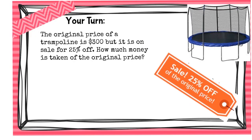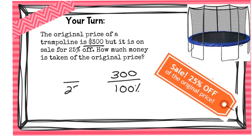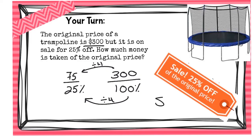Now it's your turn. The original price of a trampoline is $300, but it is on sale for 25 percent off. How much money is taken off the original price? Let's go over this: $300 represents 100 percent, and I need to find the 25 percent, which means dividing by 4. What I do to the bottom, I do to the top: $300 divided by 4 is $75. So they would take off $75 if there's 25 percent off.